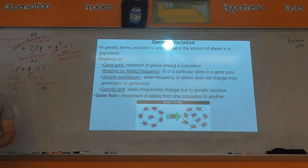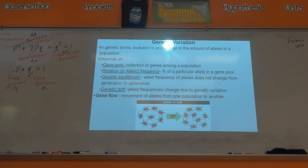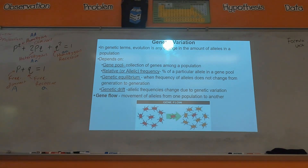I'll get into how you use these equations and some general vocab you need to be aware of in these problems. Last time I told you that evolution is change over time, but that's a really vague definition. So we want to get more specific: when I say change, I want you to think about the change in the amount of alleles in a population.